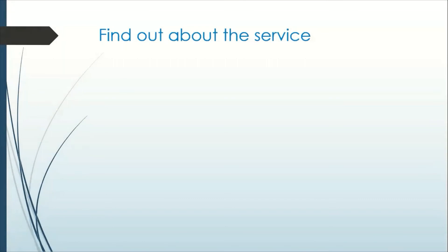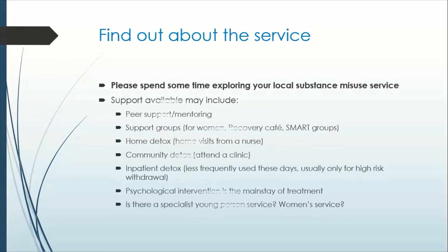As a final exercise, I'd like you to find out about your local substance misuse service by exploring their websites. Please spend some time exploring what services they provide so that when you do see somebody with substance misuse problems, you can explain exactly what they can offer. Support services differ by area, but they would include things like peer support and peer mentoring, support groups — there may be specific groups for women, a recovery café, or SMART groups.